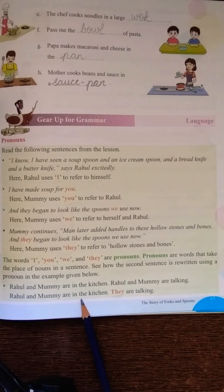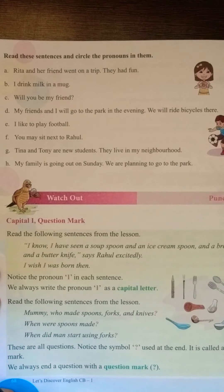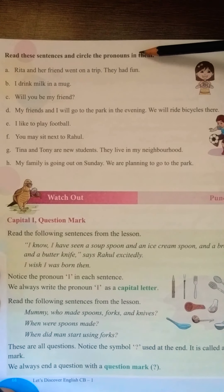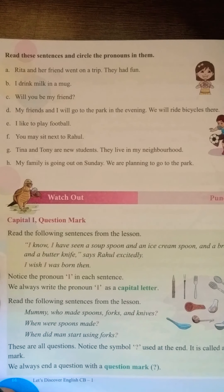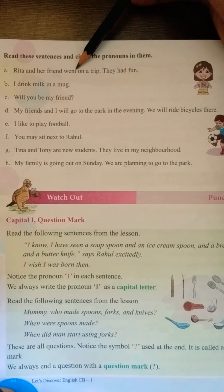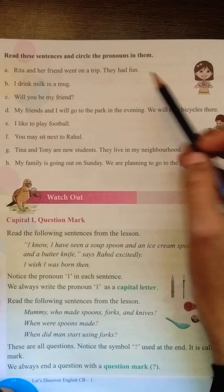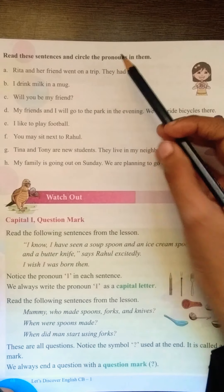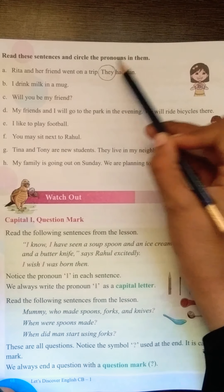Come to the next page, page number 68. Read the sentence and circle the pronouns — I, we, they, you. Number 8: Rita and her friend went on a trip. They had fun. Kaunsa pronoun used kiya hai? They. T-H-E-Y. Circle karna hai.